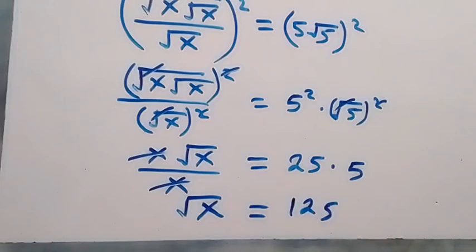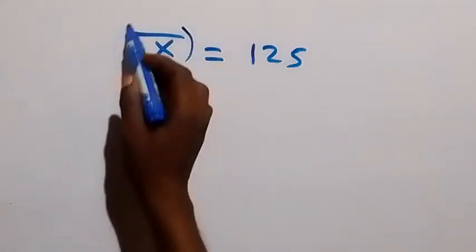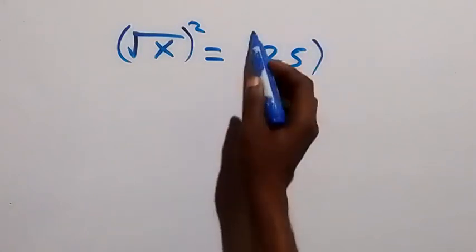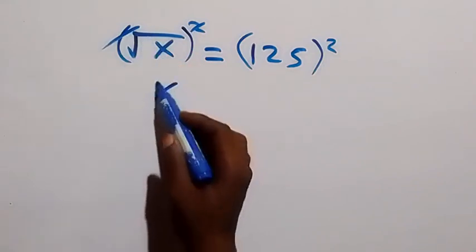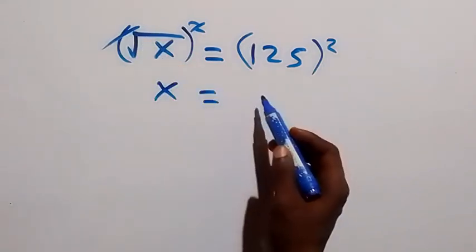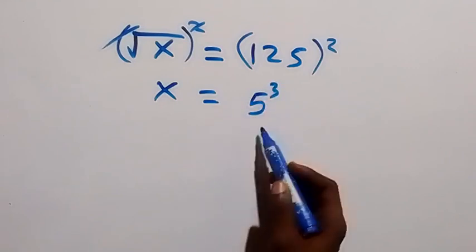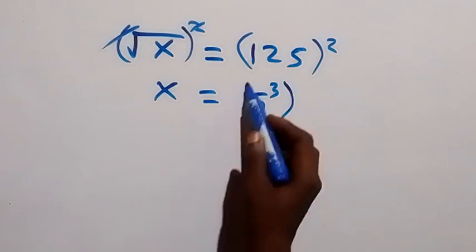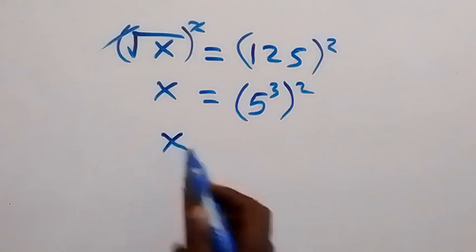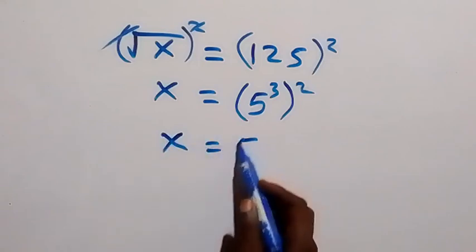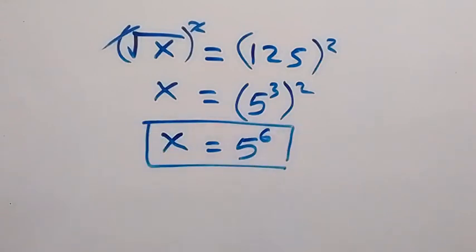Then we square both sides again. We square this side and also this side. The square cancels the square root, and we are left with x, which equals 125. We can write 125 as 5 raised to the power 3, that is 5 times 5 times 5, which is then raised to the power 2. By the law of indices, the powers multiply, so x equals 5 raised to the power 6. That is the value of x from method one.